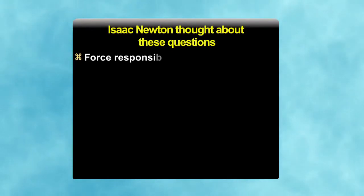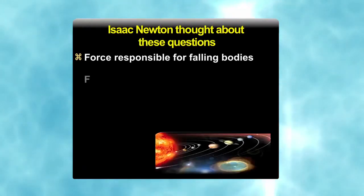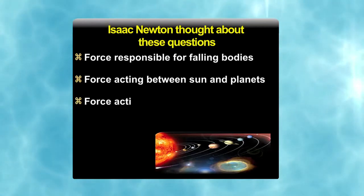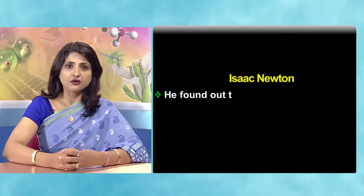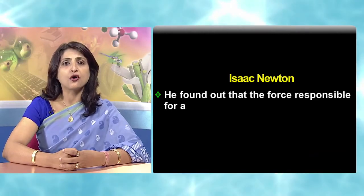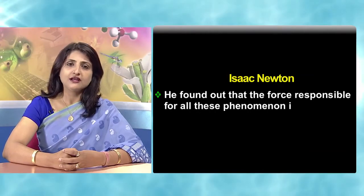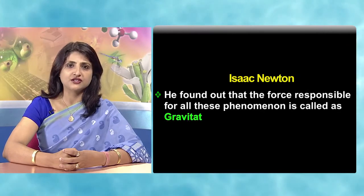Newton thought about these questions. What are the forces responsible for falling bodies? Is this force the same force acting between sun and planets? Moon and earth? And what are the secrets of planetary and satellite motion? And he found out that the force responsible for all these phenomena is called the gravitational force.